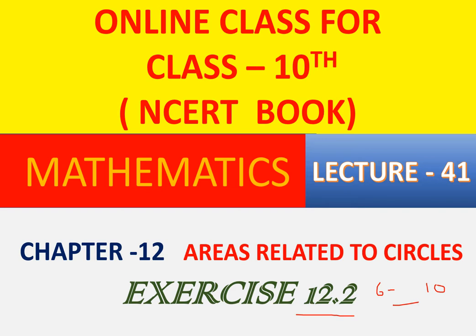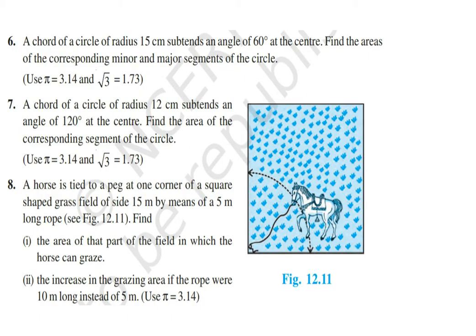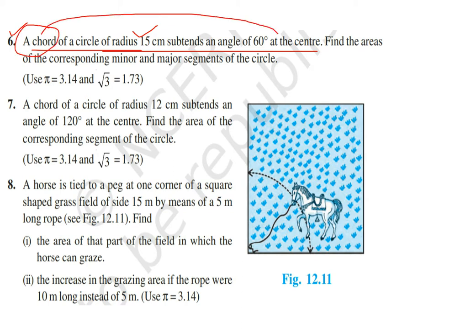Today we will discuss exercise number 12.2, question number 6 and question number 10 — five questions in total. Now let's see question 6. A chord of a circle of radius 15 cm subtends an angle of 60 degrees at the center.